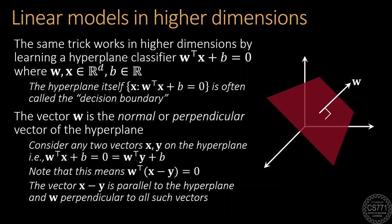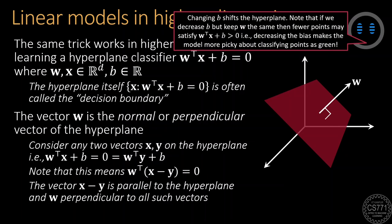Similar to the 2D case, changing the bias parameter b simply shifts the hyperplane. However, notice that if we decrease b but keep w the same, then fewer points may get assigned to the green class because fewer of them will get a score of w transpose x plus b greater than zero, which means decreasing the bias makes the model more picky, more choosy about classifying points as green. The exact opposite will happen if we increase b. The model will then get more choosy or more picky and will assign fewer points to the red class instead.